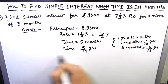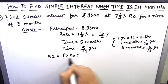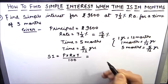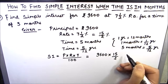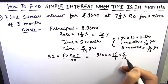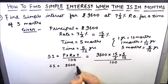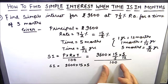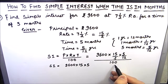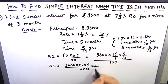Now we will put the values in the formula for simple interest: principal times rate of interest times time divided by 100. So principal is 9600, rate is 15 by 2, time is 5 by 12, all divided by 100. Simple interest equals 9600 times 15 times 5 in the numerator. This is a fraction division, so 100 becomes 1 by 100, giving denominator 2 times 12 times 100. Now we can simplify.